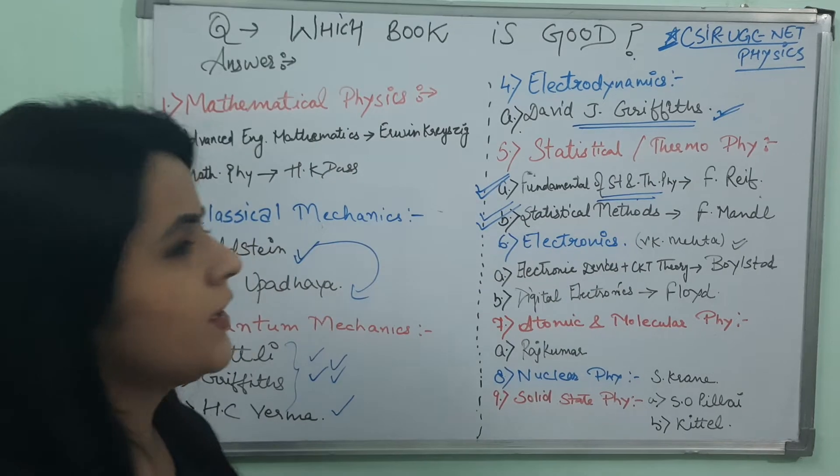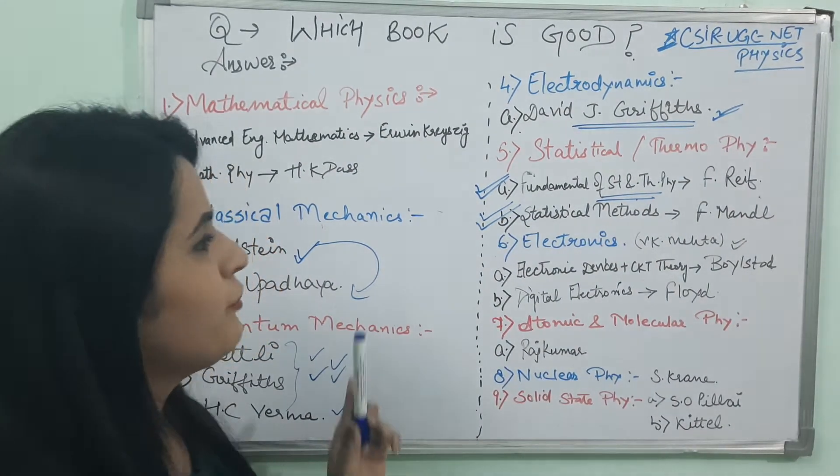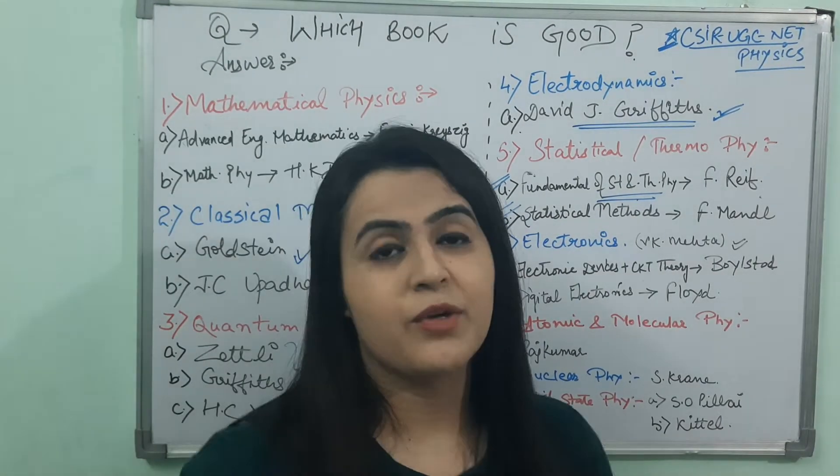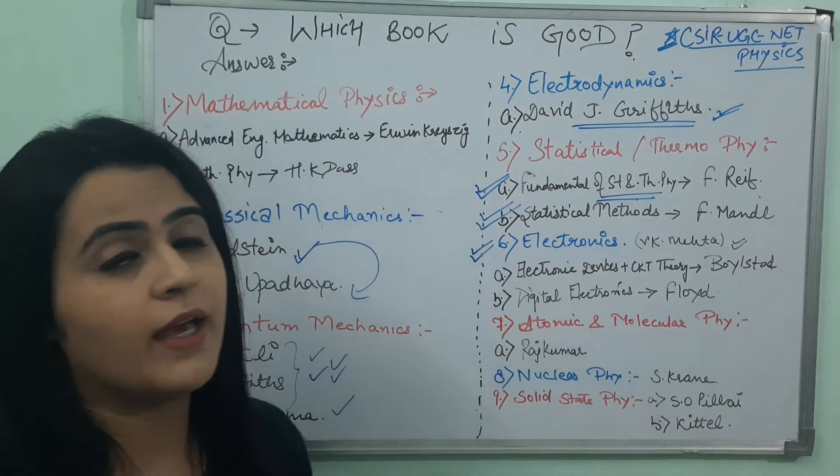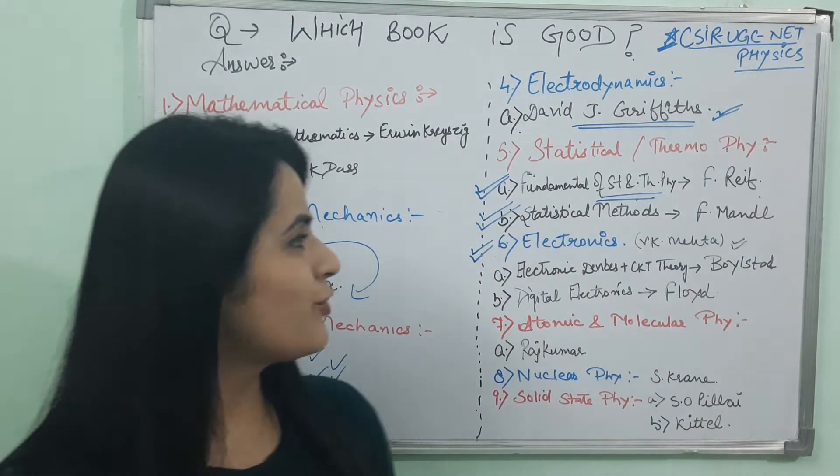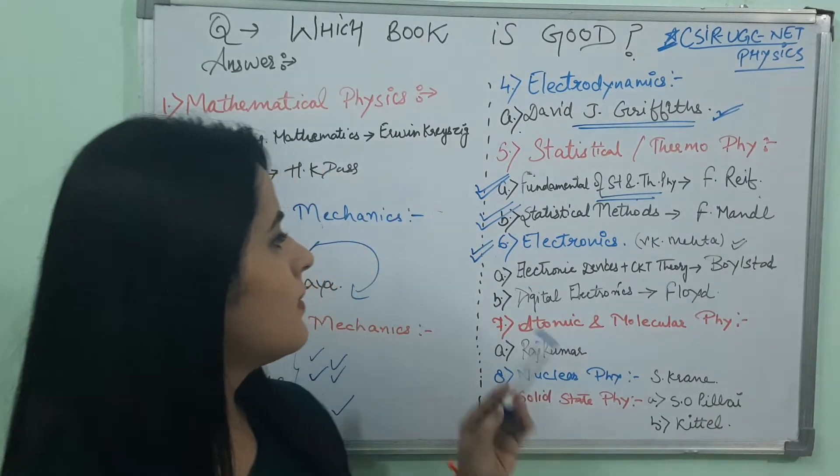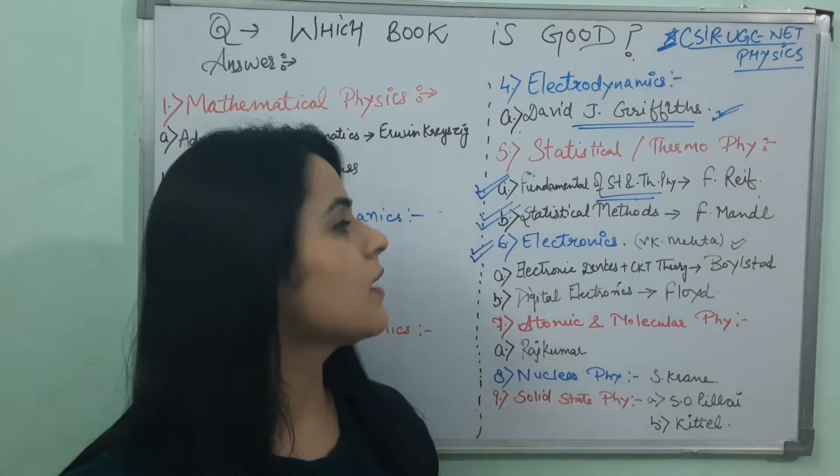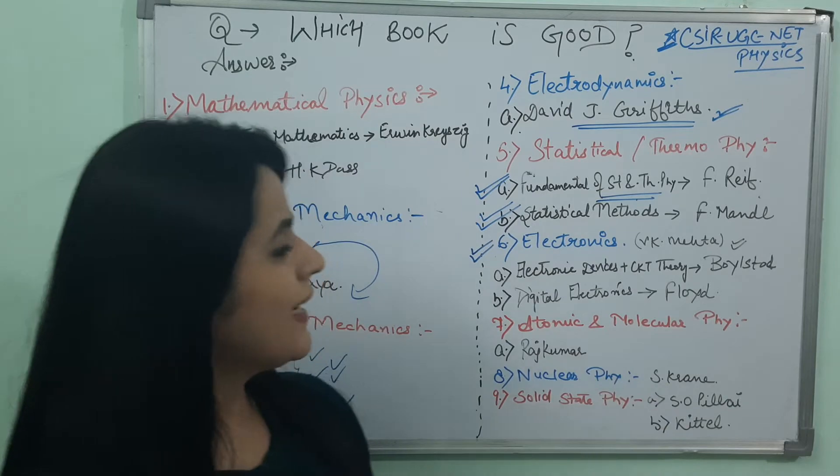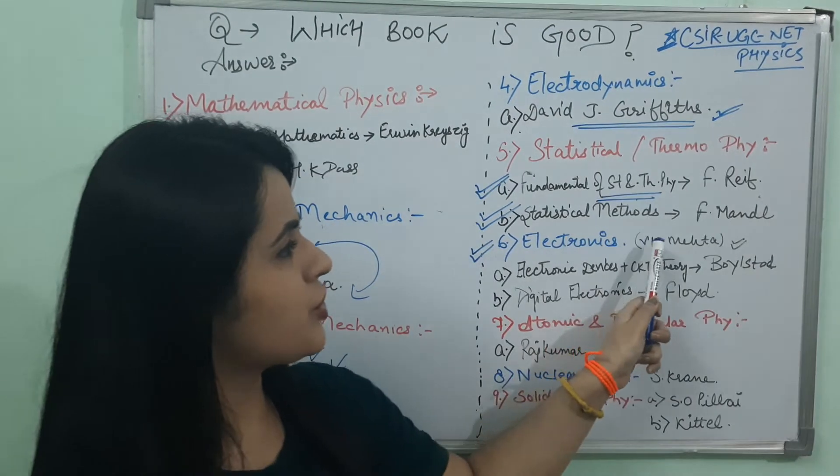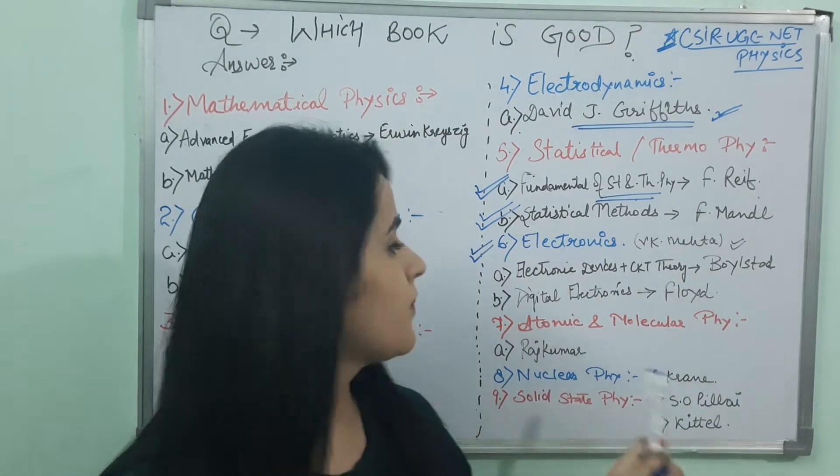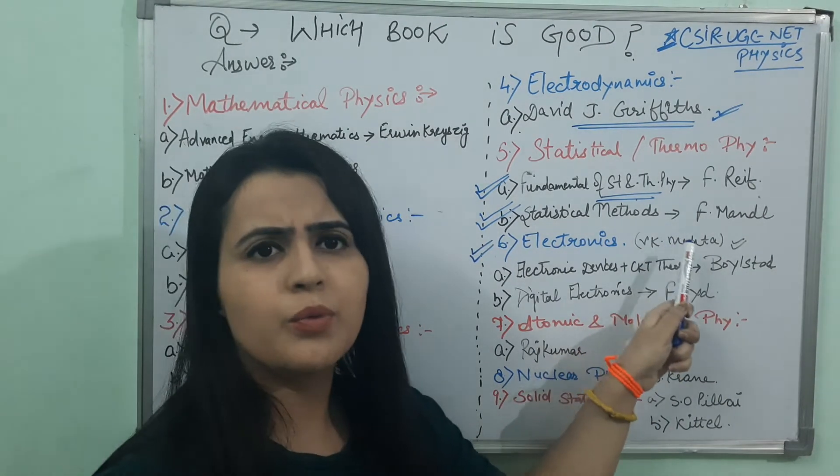Then Statistical Method is also very important. Then for Electronics, Electronics is the basic route. Approximately 30 to 35 marks question comes in paper from Electronics. For Electronics, I want to refer you two books. Electronic Devices and Circuit Theory by Boylestad. And Digital Electronics by Floyd. And most important, for Circuit Analysis, just refer VK Mehta. It is also a very good book.